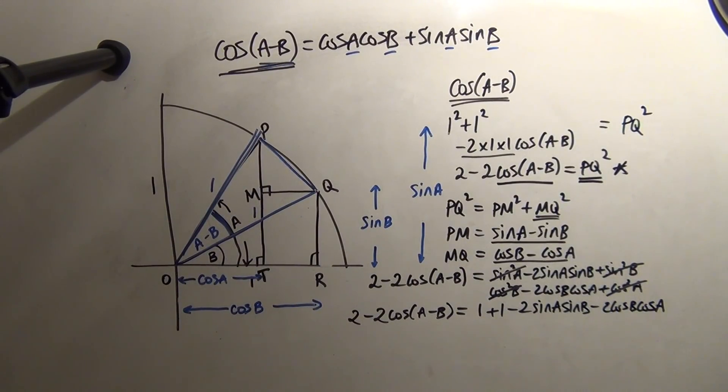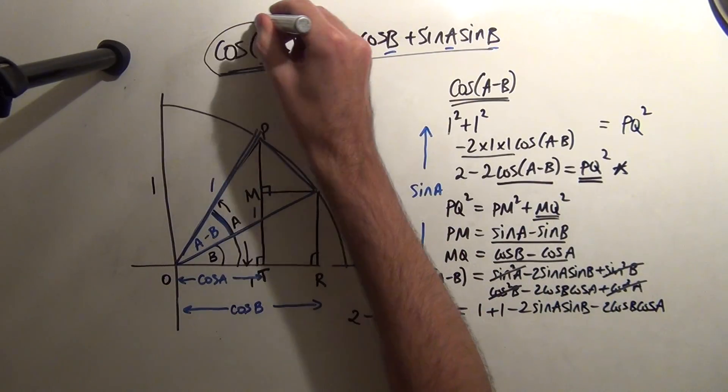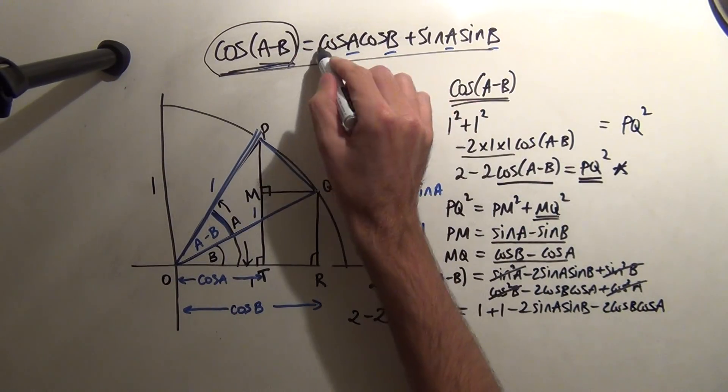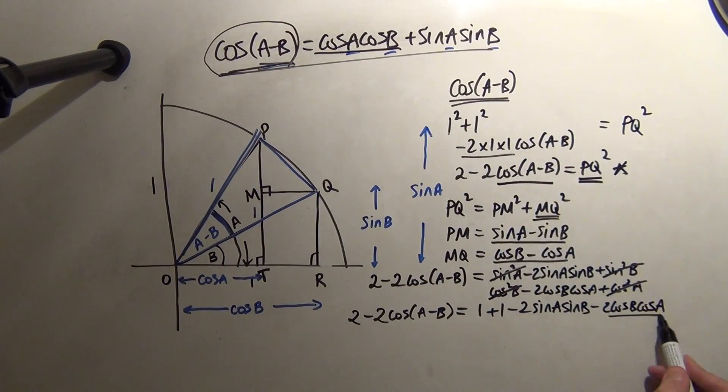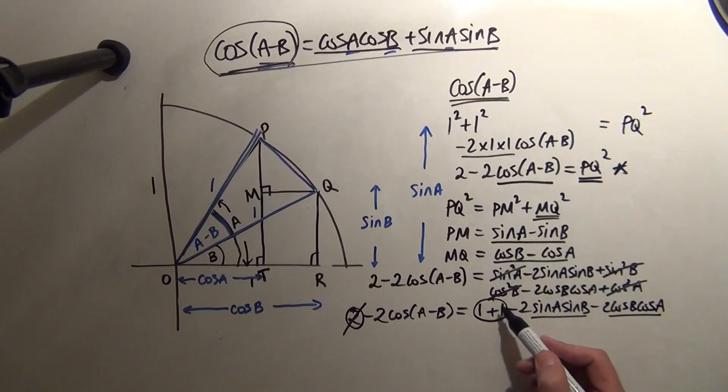Now, if we look back at what we're trying to prove, we have cos of A minus B here. We have a cosA with a cosB, and we have a sinA with a sinB. So, we're almost done. One and one is 2, and I've got a 2 here, so they're going to cancel.